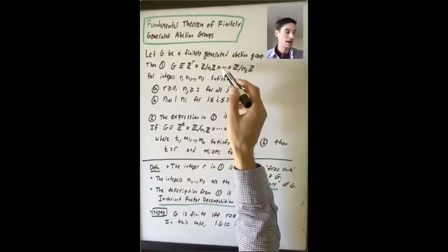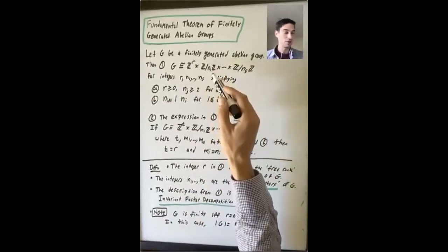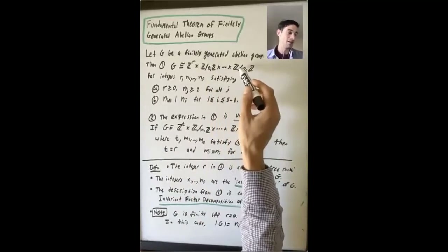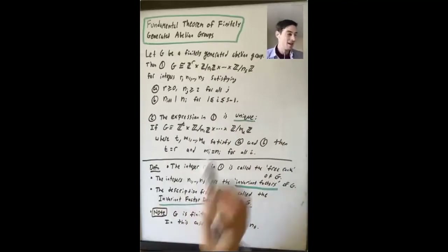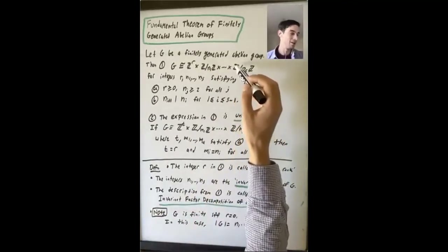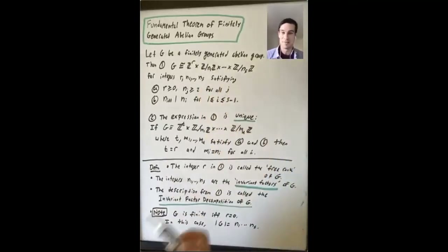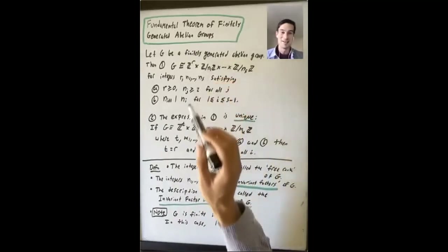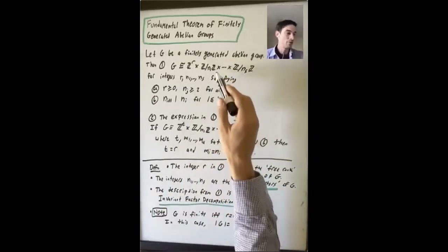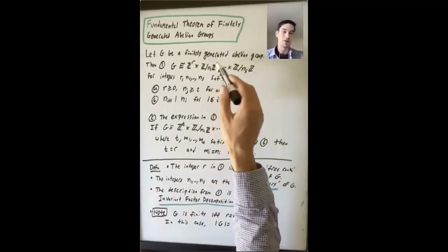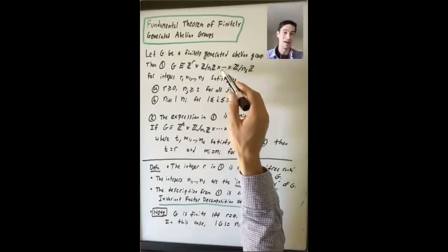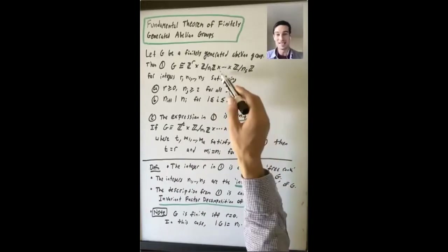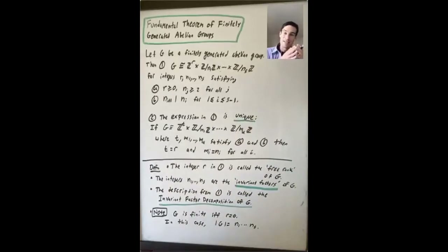Z^R only makes sense if R ≥ 0. Each N_i is at least 2 because Z mod 1Z is just the trivial subgroup — we just leave those out of the decomposition. So we get a bunch of Z mod NZ's where N is at least 2. We're saying that N2 divides N1, and N3 divides N2, and N4 divides N3, and so on — each one divides the one that came before.